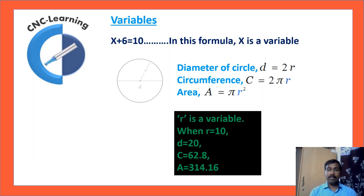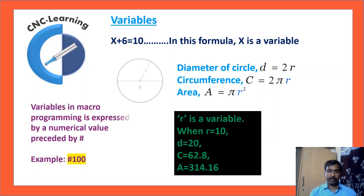When the value of R is 10, then diameter is 20, circumference is 62.8, and area is 314.16. Similarly, variables in macro programming are expressed by a numerical value preceded by the symbol hash. For example, #100.